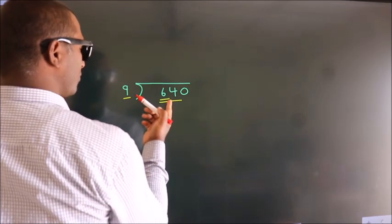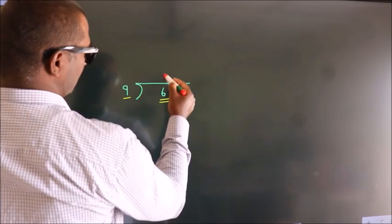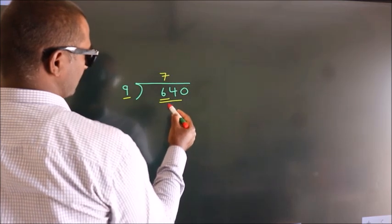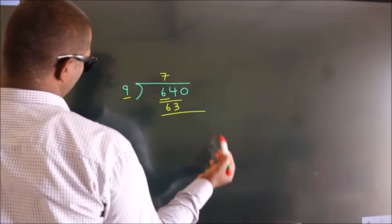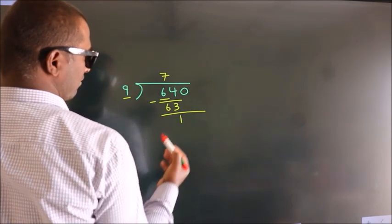A number close to 64 in the 9 table is 9 sevens, 63. Now we should subtract. We get 1.